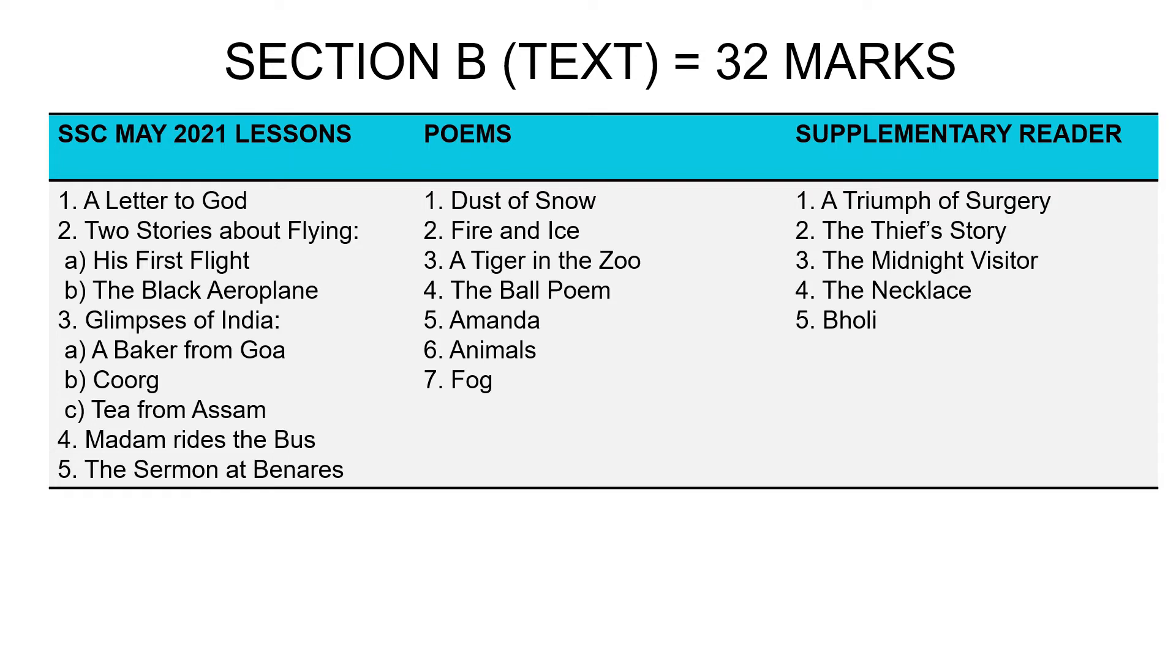Then we go to the second section, Section B for text, which carries a large component of your total of 80—32 marks is for text itself. For the 2021 May SSC students, this is the reduced portion. You have only five lessons from the textbook: A Letter to God, Two Stories About Flying (both parts—His First Flight and The Black Airplane), From Glimpses of India (all three parts—Baker from Goa, Coorg, and Tea from Assam), Madam That's the Bus, and Sermon at Benares. You have seven poems: Dust of Snow, Fire and Ice, Tiger in the Zoo, The Ball Poem, Amanda, Animals, and Fog. Whatever is not mentioned here is not there for your exams. From the supplementary reader, you have five lessons: A Triumph of Surgery, The Thief Story, The Midnight Visitor, The Necklace, and Bholi. Whatever is not mentioned on screen is not there for the May 2021 SSC board exam batch.